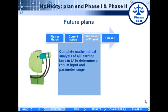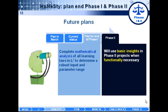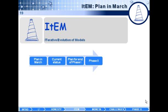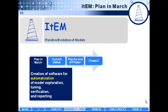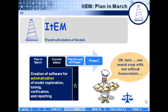The future plans are to complete a mathematical analysis of the learning laws to determine a robust input and parameter range. In phase two, we would like to use the insights of this project in the animat where functionally useful. Regarding ITEM — the Iterative Evolution of Models framework — you can observe it live implementing the soup simulation; go to Ben's poster and he will show you both the soup and ITEM at the same time.